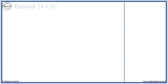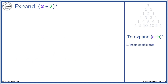For example, let's expand (x + 2) to the power of 3. To expand a binomial, first insert the coefficients from Pascal's triangle. We have power 3, so we use the third row with a 3 in it. We have 1, 3, 3, and 1.